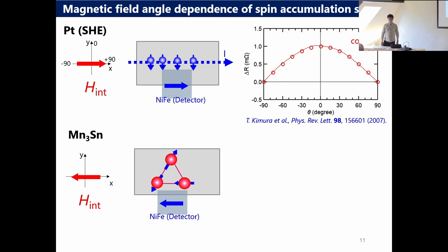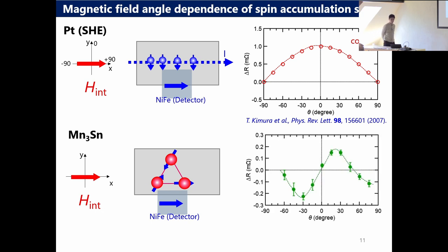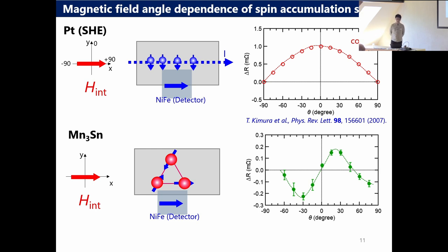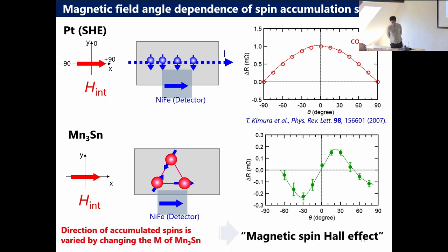Then we checked the angular dependence. This is the platinum case and the Mn3Sn case — in this slide I want to compare the angular dependence. In the case of the spin Hall effect in platinum, if the charge current is applied in this direction, the spin is accumulated in this direction. Then, if we rotate the magnetic field from minus 90 to plus 90 degrees, we can get this kind of cosine-theta angular dependence, where delta R is the amplitude of the hysteresis loop.